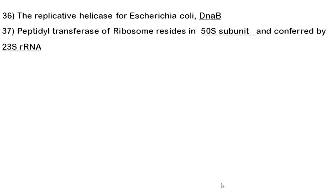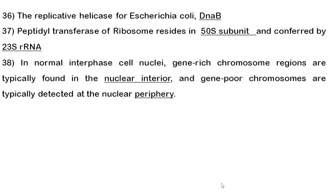Thirty-seventh question: peptidyl transferase of the ribosome resides in the largest subunit — the 50S subunit. This peptidyl transferase activity is provided by the 23S ribosomal RNA. Thirty-eighth question: in a normal interphase cell nucleus, gene-rich chromosome regions are found in the interior of the nucleus, while gene-poor chromosomes are at the nuclear periphery.